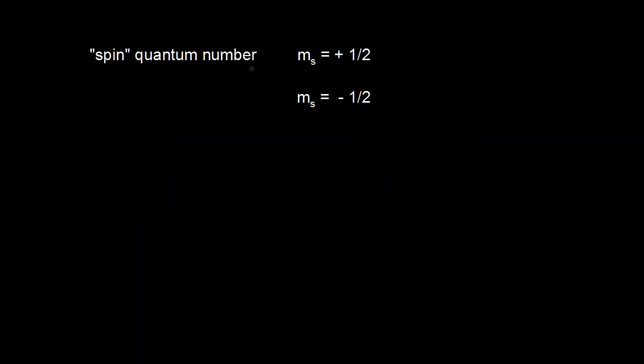The allowed values for the spin quantum number are positive one-half and negative one-half, so an electron could have spin up or spin down. Spin is in quotation marks because we can't really visualize an electron spinning on its axis — that's not really what it's doing — so we just call it the spin quantum number.